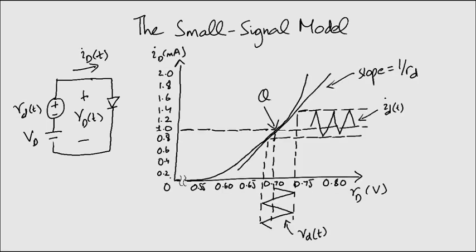This graph shows what we are trying to achieve. Note that these values are for a diode having N equals 2. The tangent has a slope at Q equal to 1 over RD.